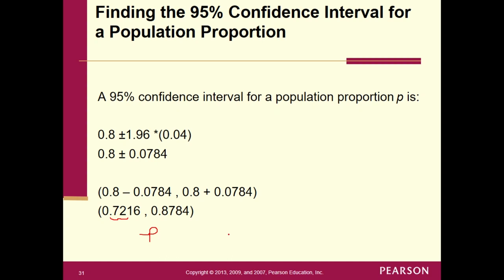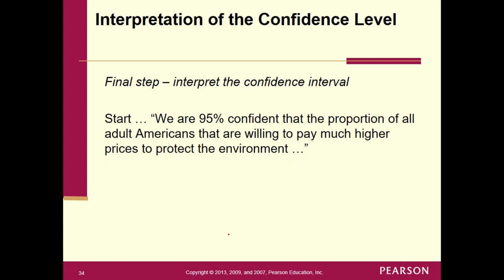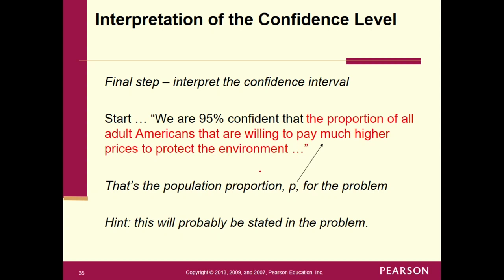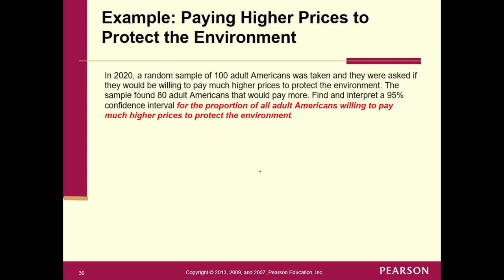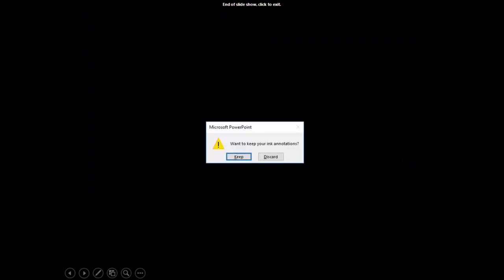The final step is to interpret the confidence interval. We say: we are 95% confident that the proportion of all adult Americans willing to pay much higher prices to protect the environment is between those two values. That's the population proportion P stated in words — and the problem itself tells you what that parameter is. That's the end of section 8.2. Thank you for your time.